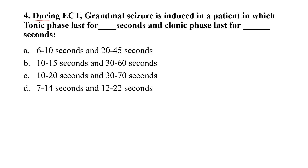Question number four: During ECT, a grand mal seizure is induced in a patient. The tonic phase lasts for how long, and the clonic phase lasts for how long? Option A: 6 to 10 seconds and 20 to 45 seconds. Option B: 10 to 15 seconds and 30 to 60 seconds. Option C: 10 to 20 seconds and 30 to 70 seconds. Option D: 7 to 14 seconds and 12 to 22 seconds. The correct option is option B — the tonic phase lasts 10 to 15 seconds and the clonic phase lasts 30 to 60 seconds.